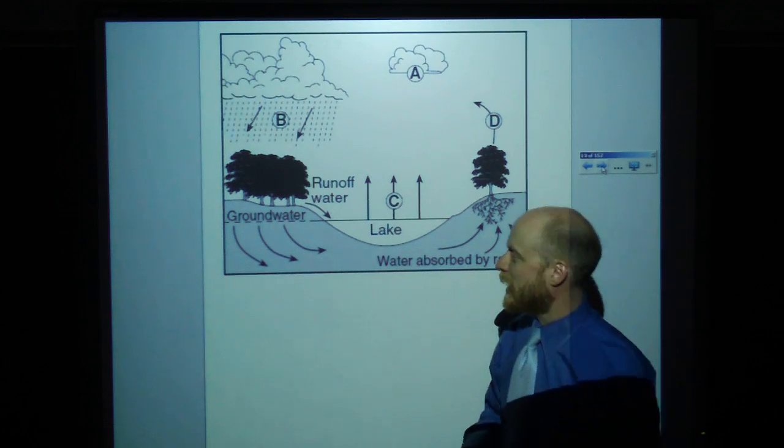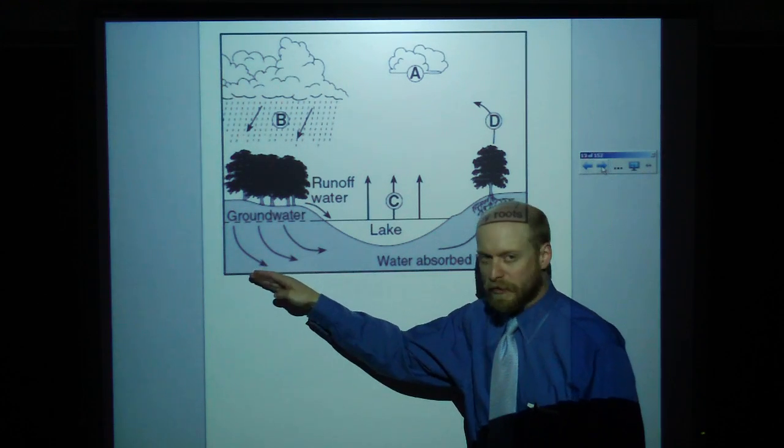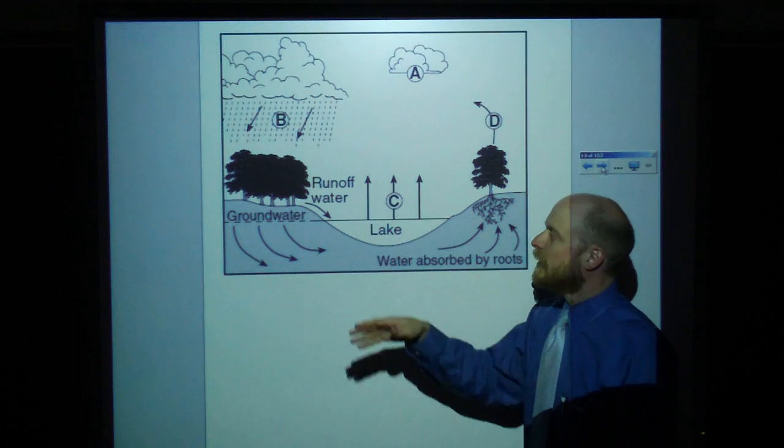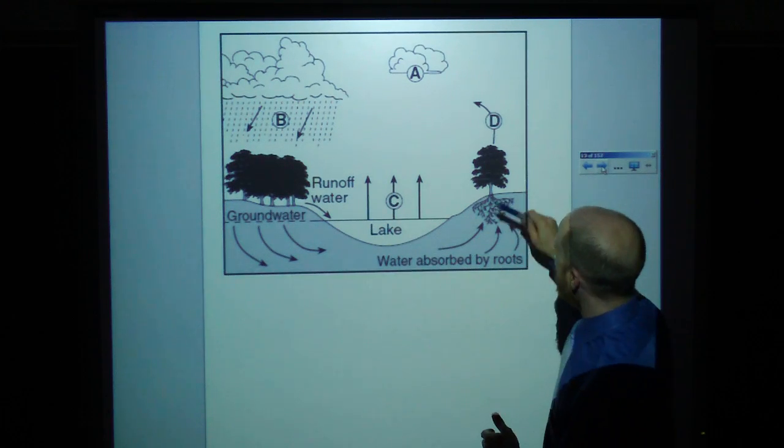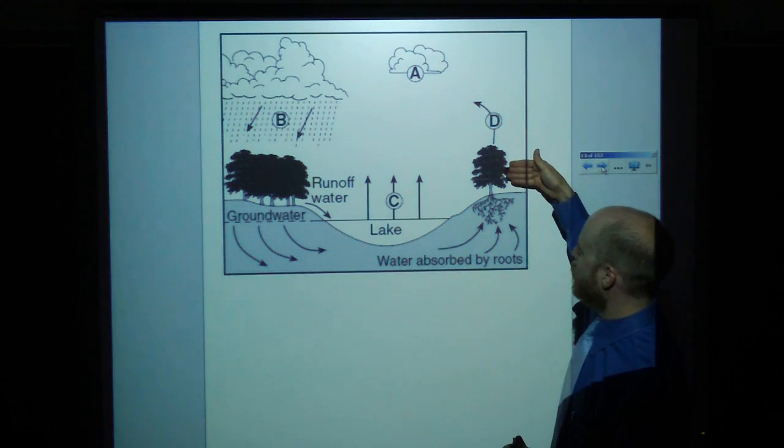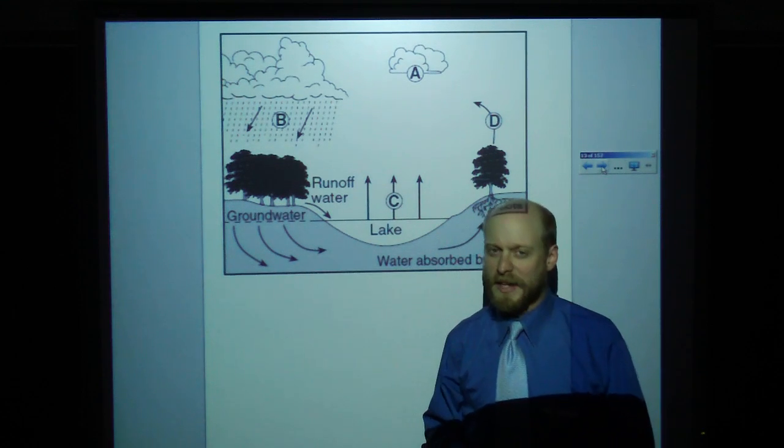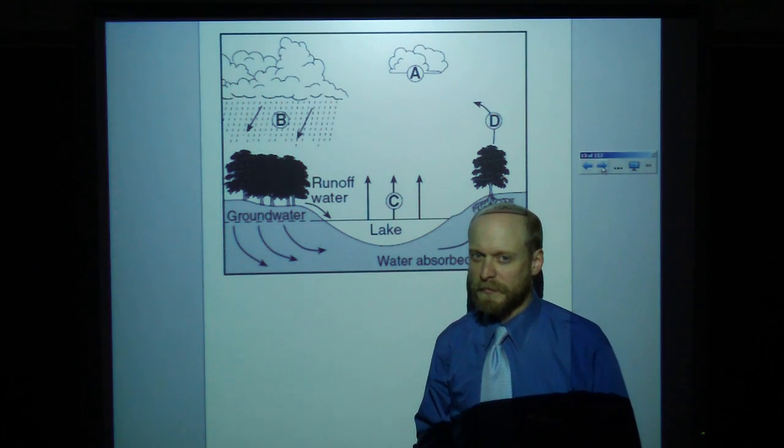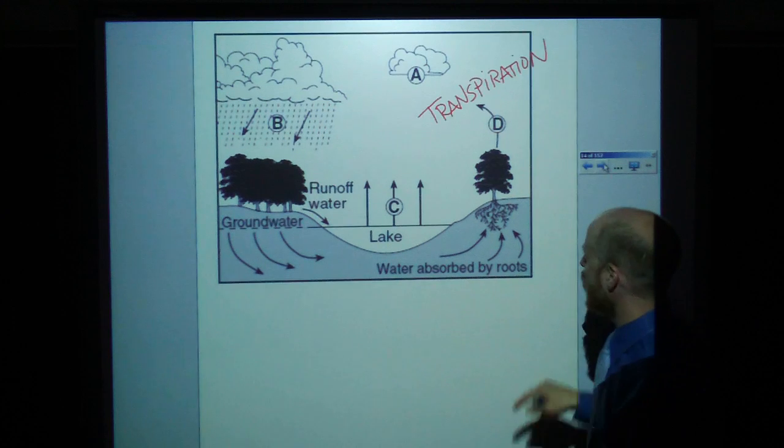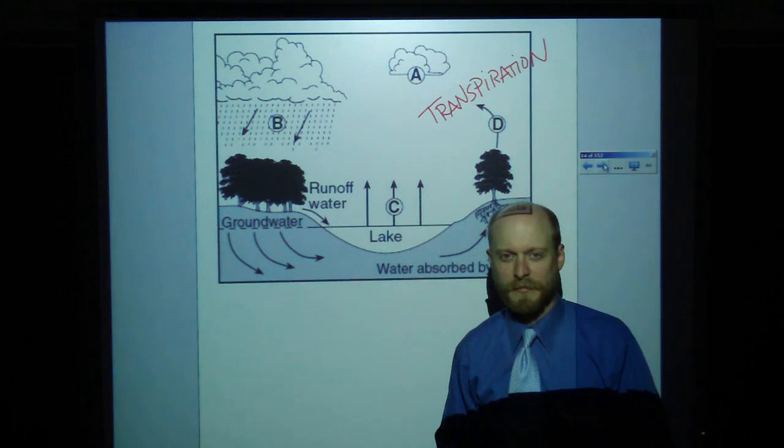Here we have the hydrologic cycle. Infiltration into the ground or if it doesn't infiltrate, the water runs off. A lot of this is stuff that you know, but this is where kids get tripped up. A tree giving off water vapor into the air. What's that called? Very good. Transpiration. Good job.